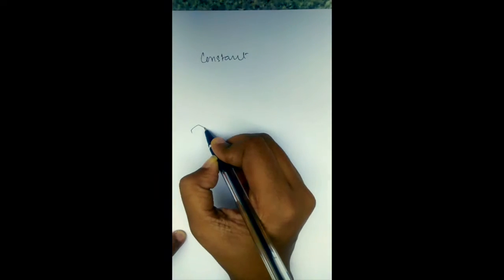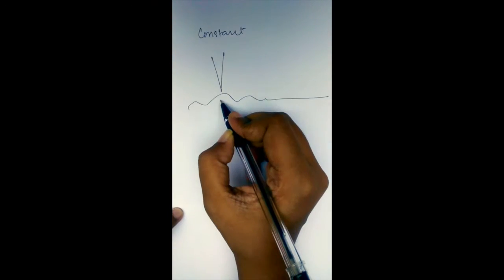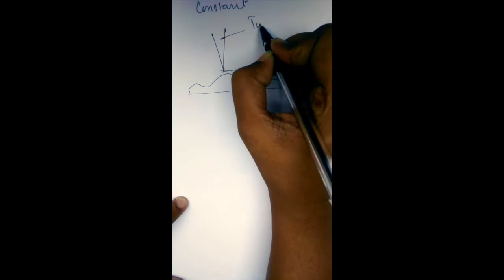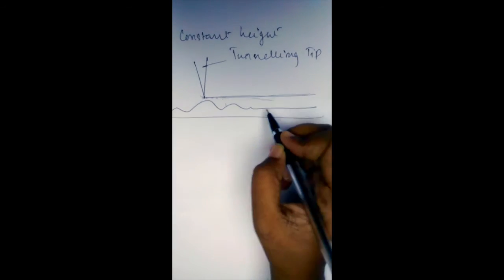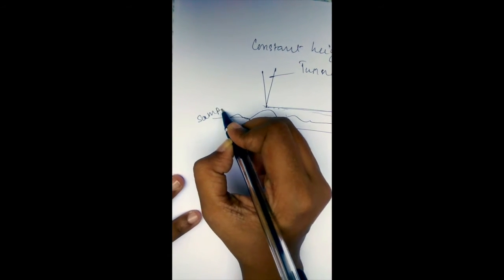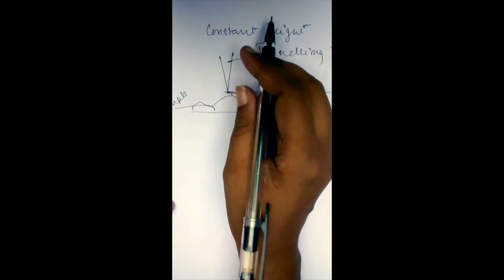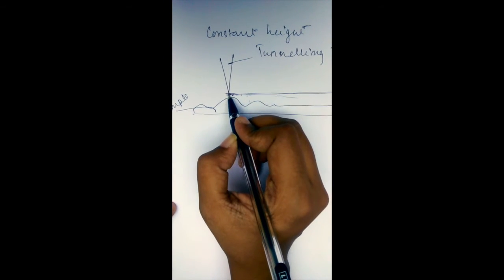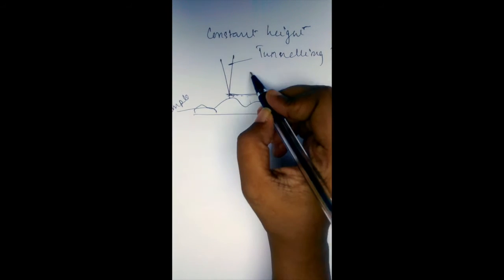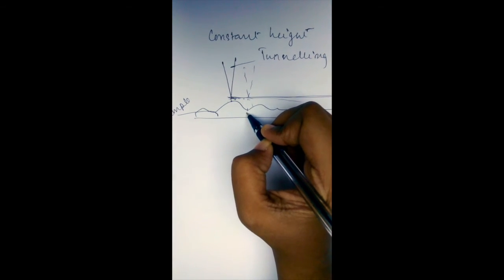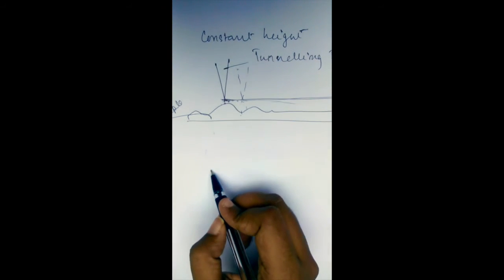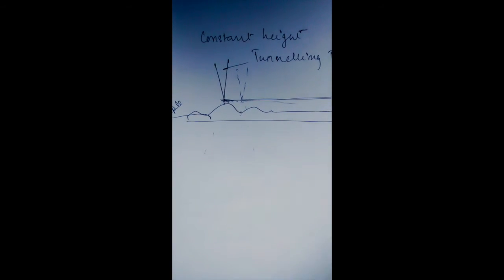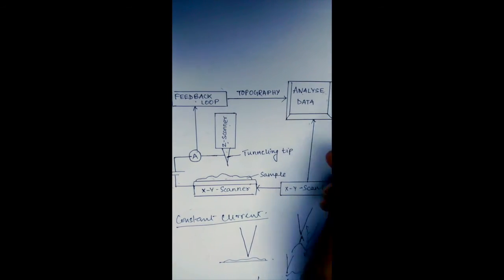In the constant height mode, a constant height is maintained between the tunneling tip and the sample. As the tunneling tip moves across the sample, a varying current is generated. Where the distance is very small, the current generated is higher, and as the tip moves to areas where the distance increases, comparatively weaker current is generated. This varying current is sent back through the feedback loop and analyzed with the help of topography.